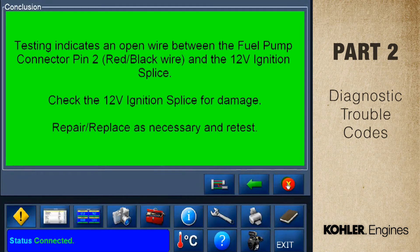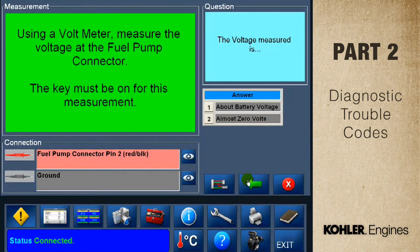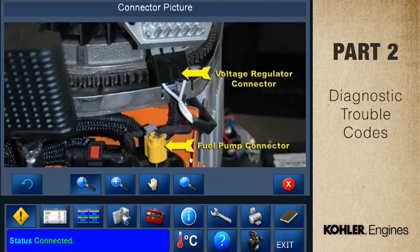If you're not sure where to connect the meter, you can see a picture of the repair area by selecting the eyeball icon next to the connection detail. When I click the eyeball next to the fuel pump connector, you can see the wiring for that area. If there's no image available for the detail, the eyeball will be gray and inactive.